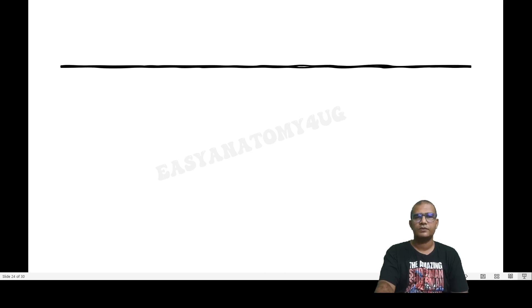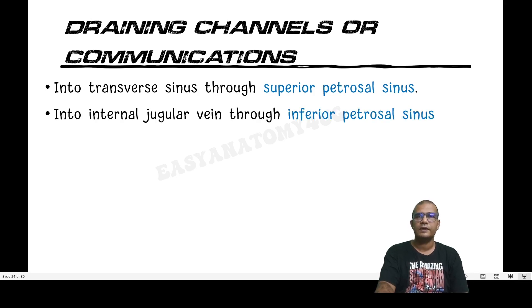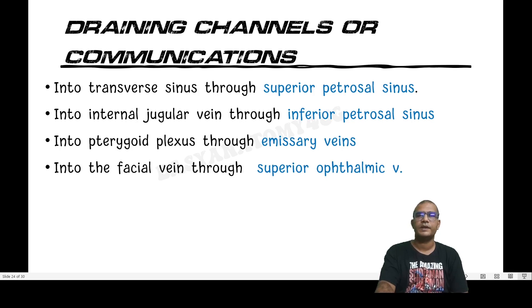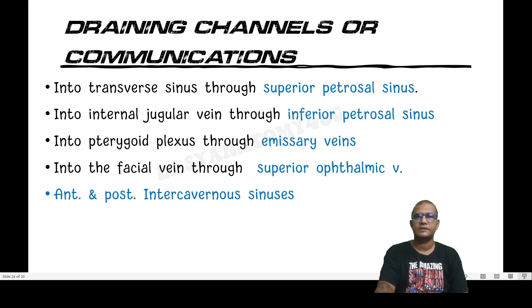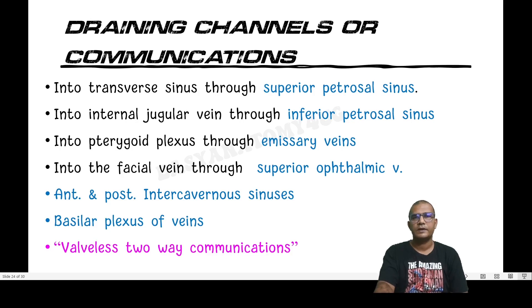The draining channels and communications of the cavernous sinus are: it drains toward the transverse sinus via the superior petrosal sinus; toward the internal jugular vein via the inferior petrosal sinus; into the pterygoid plexus through emissary veins; and to the facial vein via the superior ophthalmic vein. The anterior and posterior intercavernous sinuses allow the two cavernous sinuses to communicate with each other. It also communicates with the basilar venous plexus, which communicates with the vertebral venous plexus. All these are valveless, two-way communications.